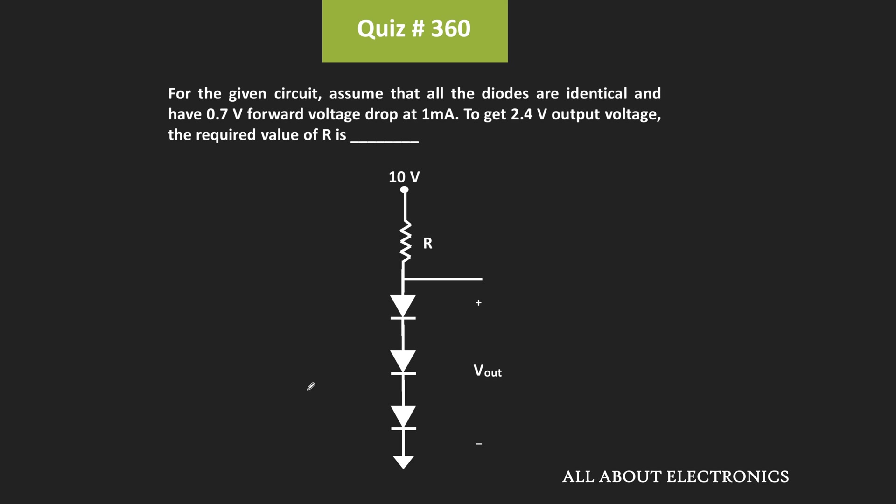Hey friends, welcome to the YouTube channel All About Electronics. In this question, we have been given a diode circuit and we have been asked to find the value of this resistor R such that the output voltage of the circuit is equal to 2.4V.